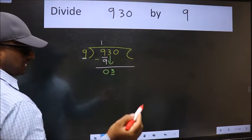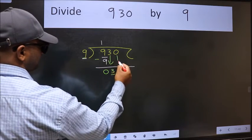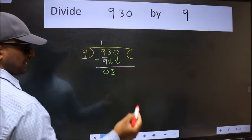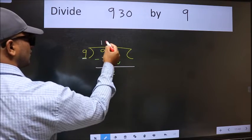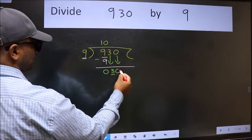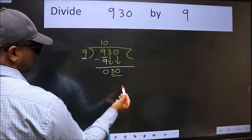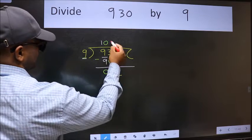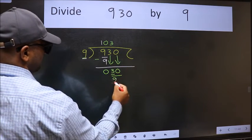So we should bring down the second number. And the rule to bring down the second number is we should put 0 here. Then only we can bring this number down. Now 30. A number close to 30 in the 9 table is 9 times 3 is 27.